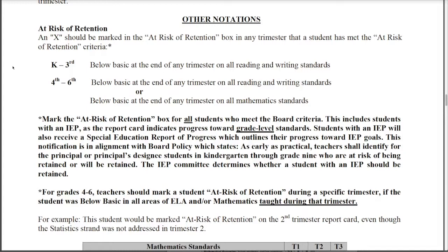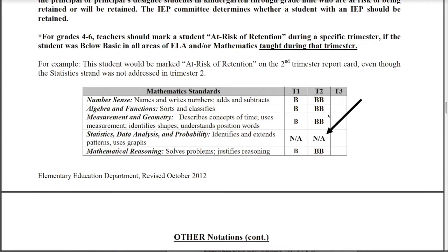For teachers in grades four through six, because you're looking at both language arts and math as areas in which a student can qualify, you might run across a situation like this. You can see this student in the second trimester was below basic in all areas, although in statistics, data analysis, and probability that domain was not taught during the second trimester so they were marked as not applicable. This student would still be marked at risk of retention because in every other strand or domain in mathematics that was taught during that trimester, the student received a below basic mark.